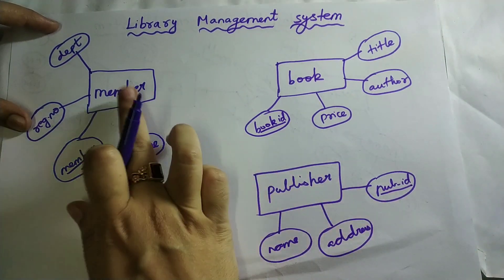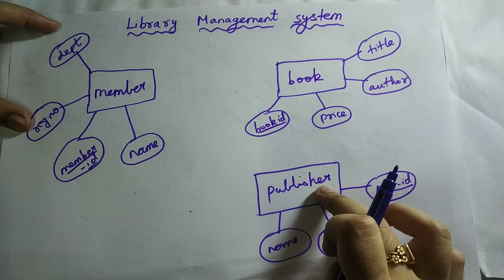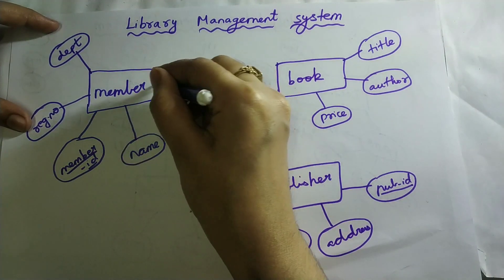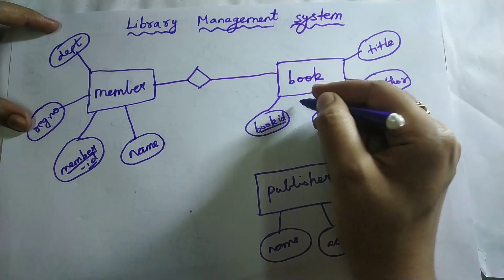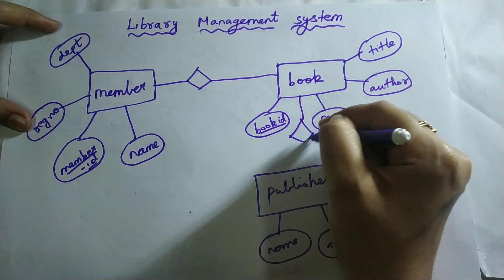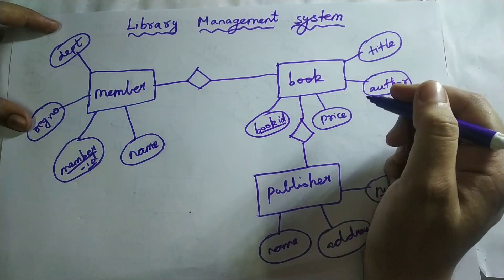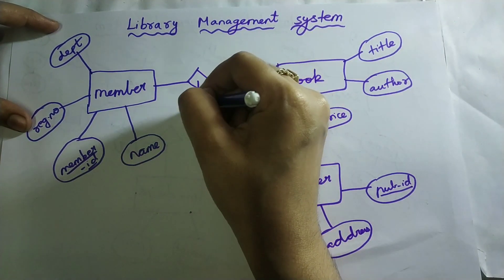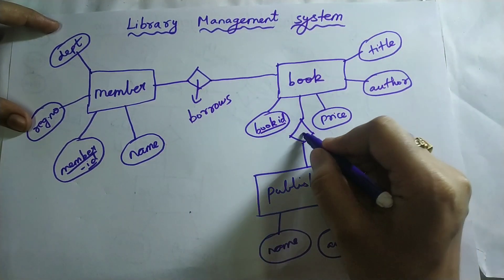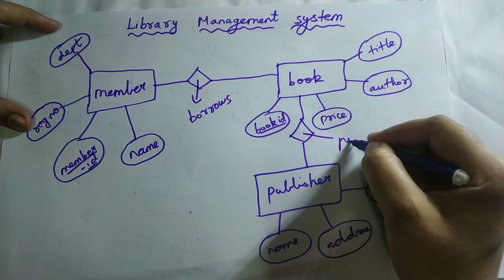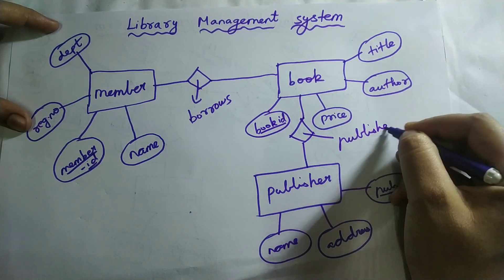I should join these entities using a diamond box, which is the relationship. Through lines I should draw and join. This diamond is known as a relationship. Inside this diamond, I am going to write borrows. And inside this diamond, I am going to write published by.